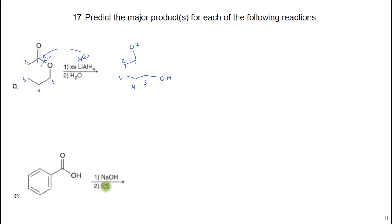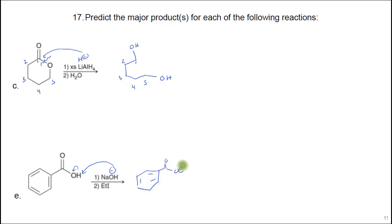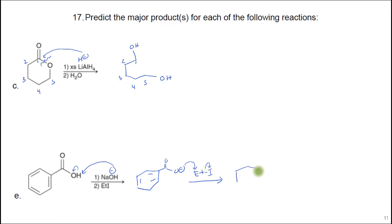If you treat sodium hydroxide with the carboxylic acid, this can remove this proton, making that O-minus, which can then attack the ethyl iodide. So you'd have O-minus attacking ethyl iodide, which will kick off the iodide. This is another way to form an ester.